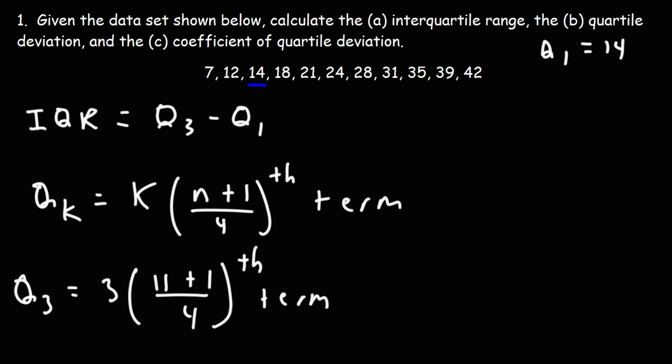11 plus 1 is 12. 12 divided by 4 is 3. And then 3 times 3 is 9. So the third quartile is going to be the ninth term.